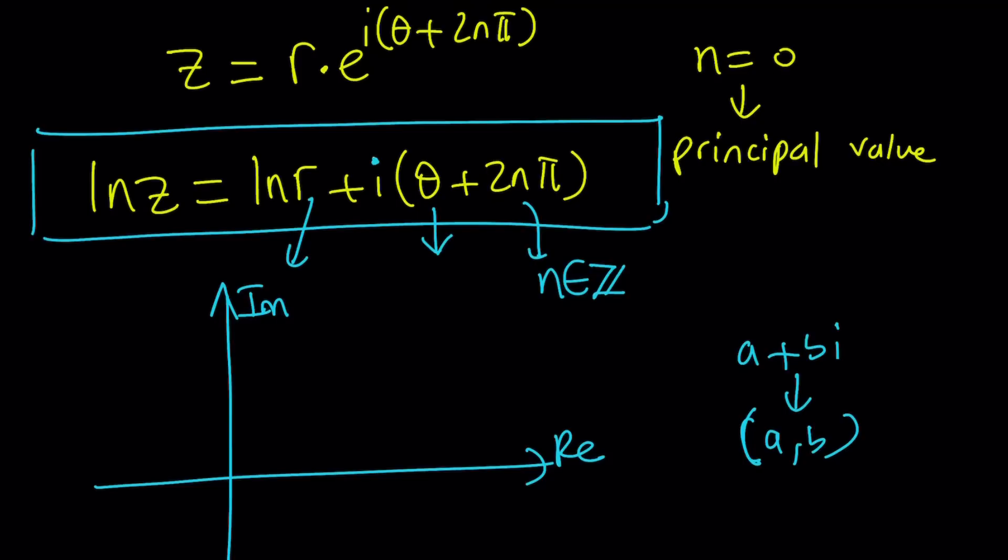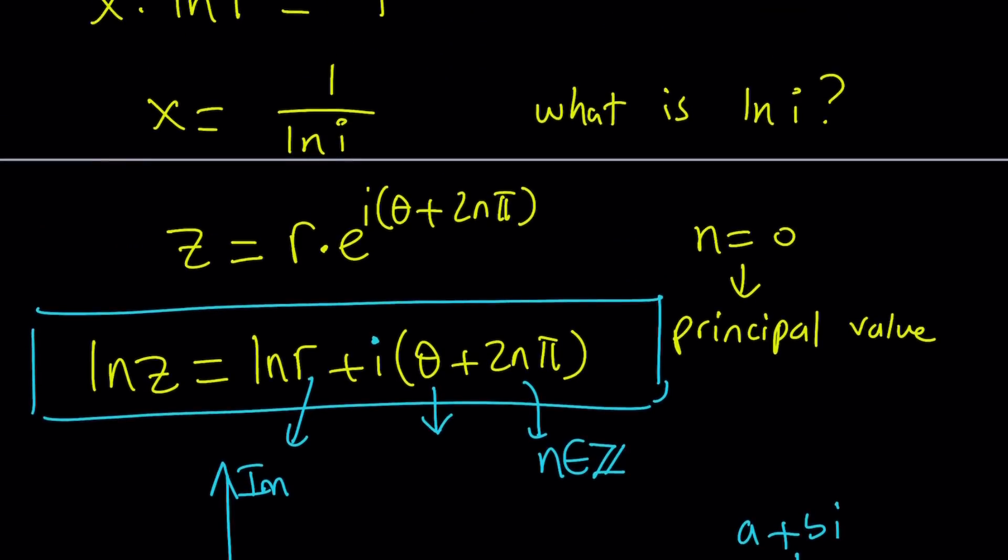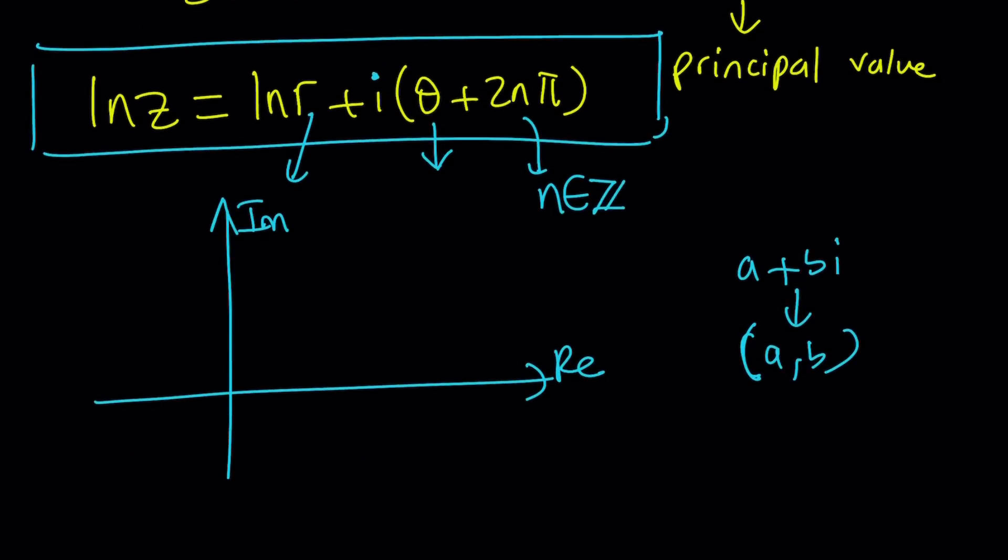Great. So in this case, our number, the number we're dealing with is i. So we're going to write i first as 0 plus 1 times i, so that the value of a is 0 in our case, and b is 1. So 0 comma 1 is going to be the point that we're going to look at. This is our number.